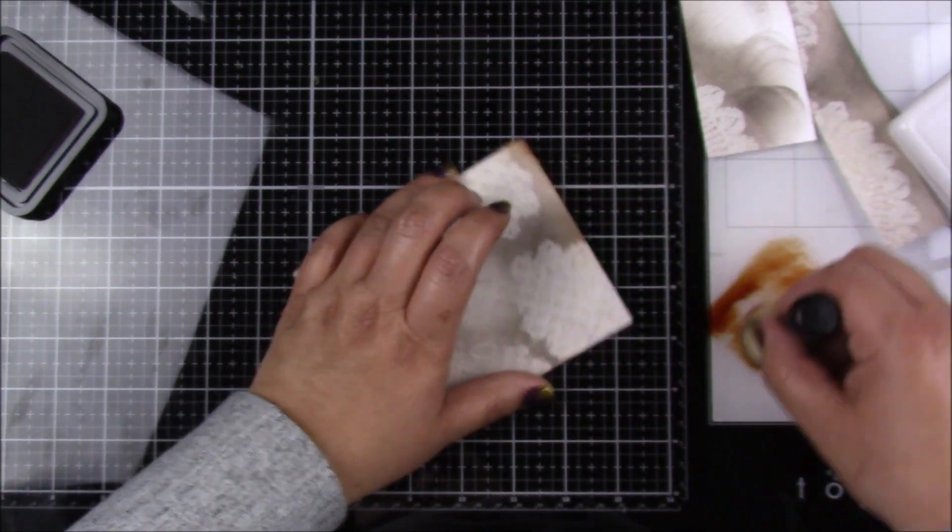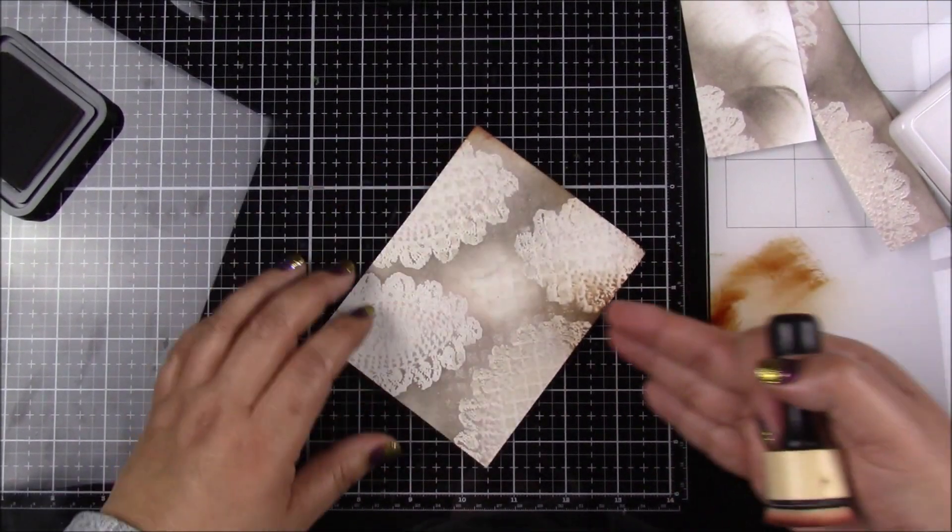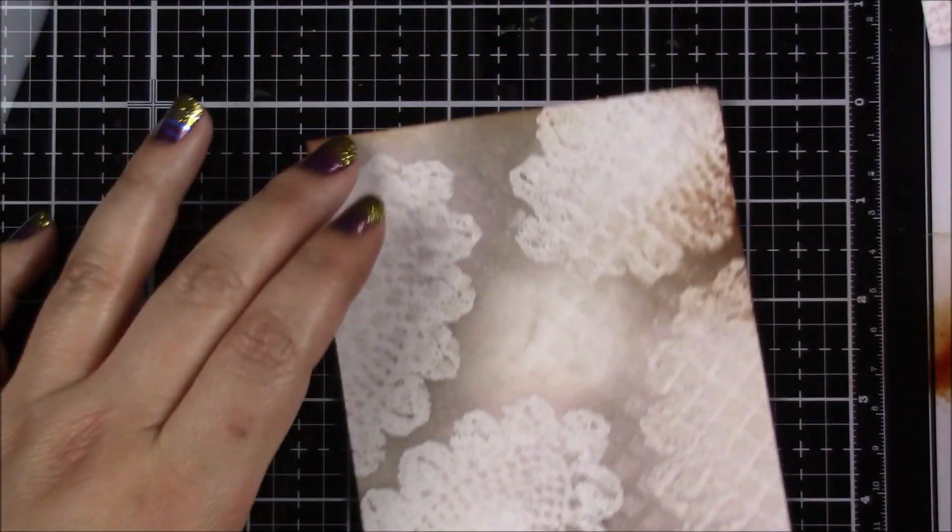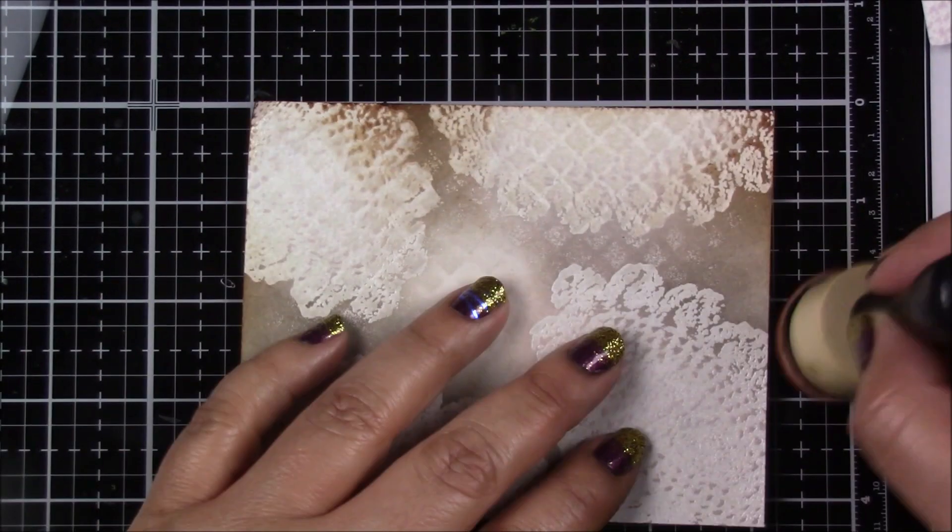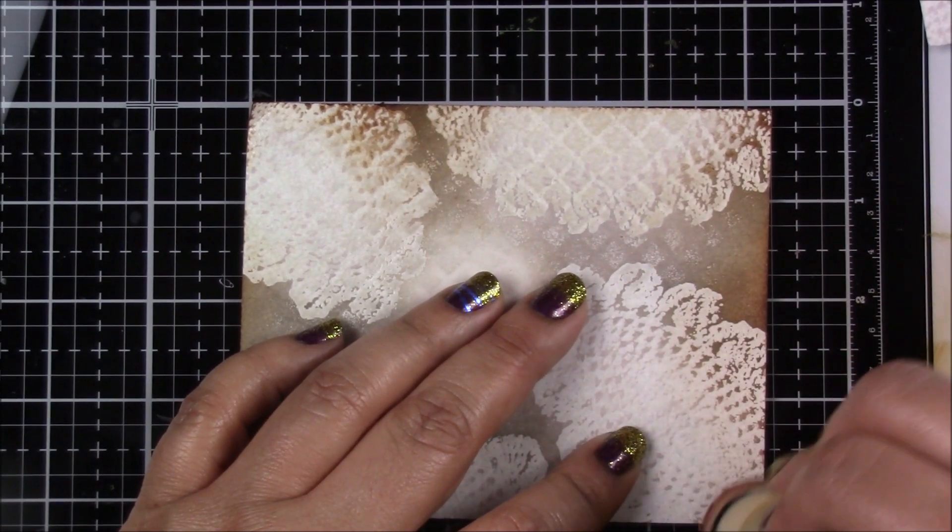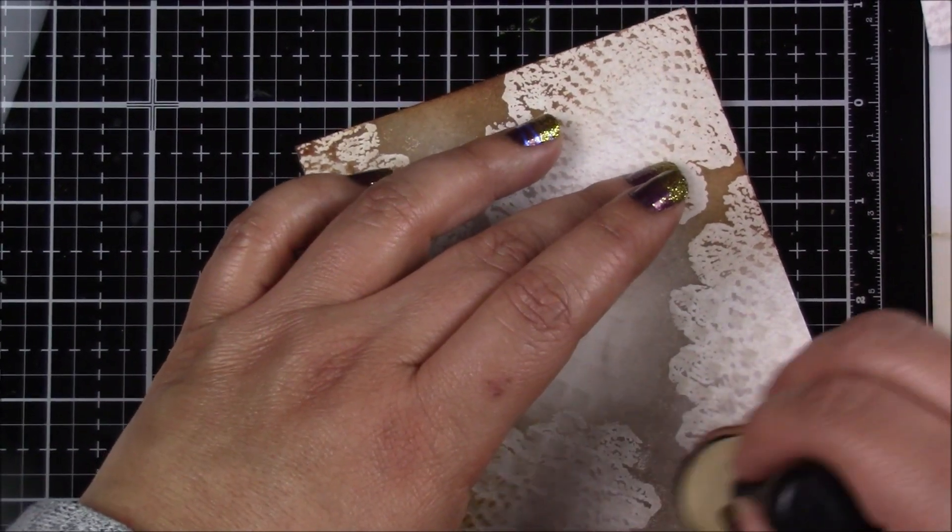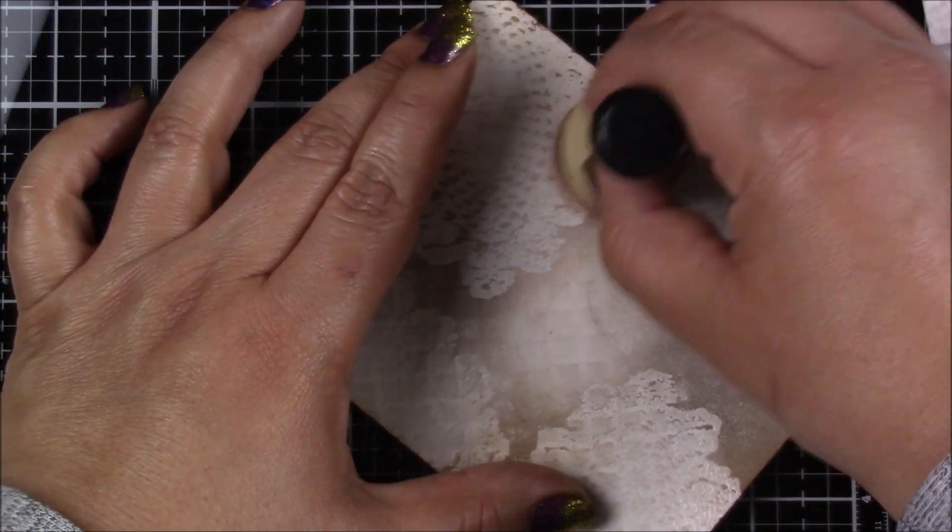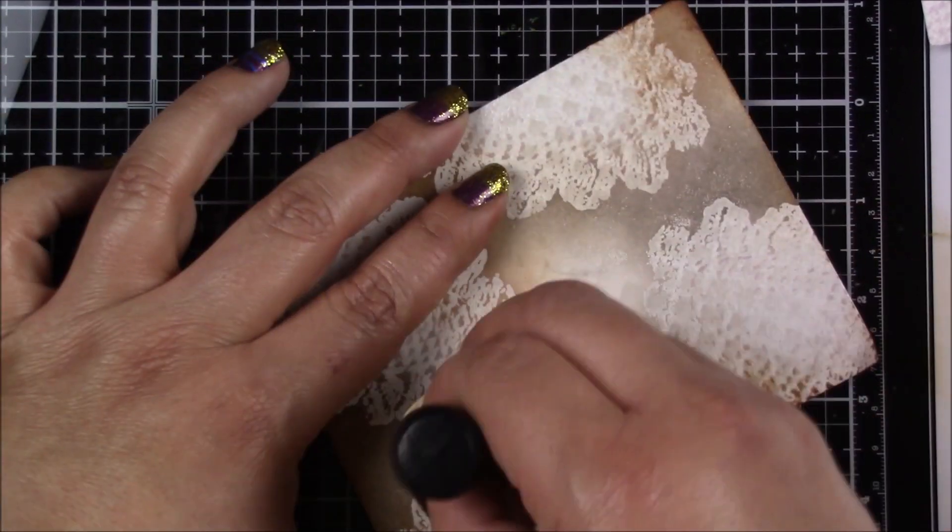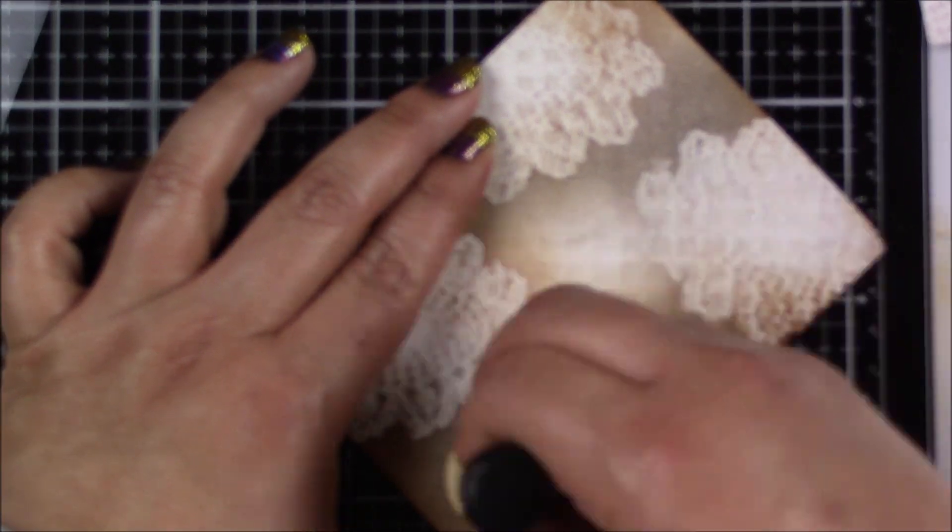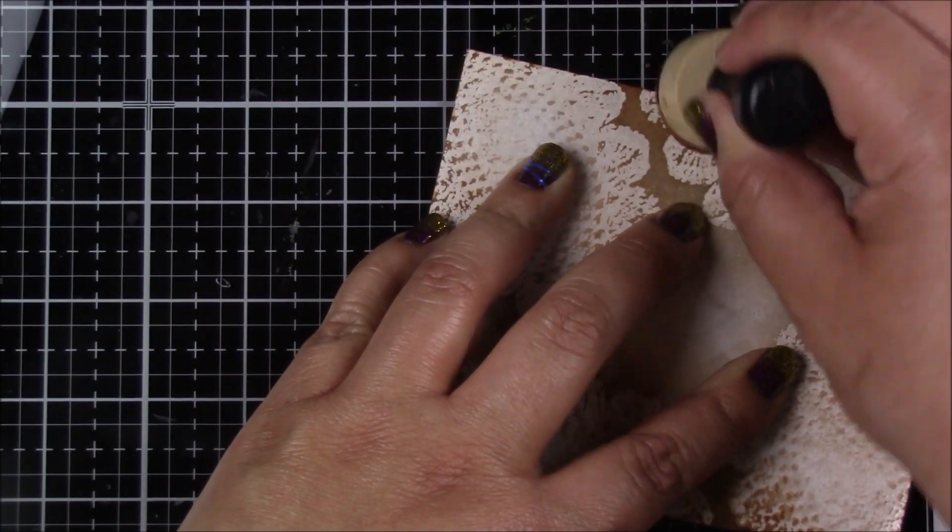Now I'm using another distress ink called vintage photo. This is just to add a little bit more color and more depth to the images. As you can see, I'm applying it towards the edge of each image and then I will go over the inside of the images as well, just to catch those little blank spots in between the little crochet image, and that will help it pop even further.